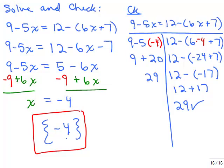We did get the right answer of negative 4. If you get the wrong answer, it's hard to find your mistake — I suggest you erase and start from the beginning. It's really hard to find your own mistakes, but you give the problem to somebody else and they see it right away.